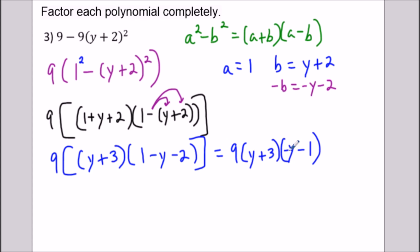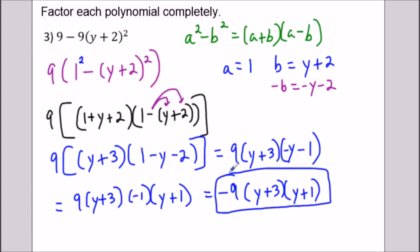So we'll have 9(y + 3)(-1) times, and that's going to change the sign of everything on the inside. So then we could combine -1 × 9. And we'll have -9(y + 3)(y + 1). So this would be our final result to the next question here.